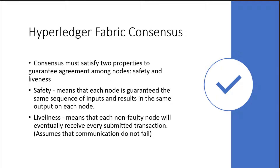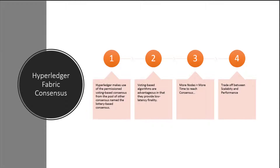The second property is liveness - making sure that each non-faulty node will receive the submitted transaction; that node has to be available to receive it. Hyperledger uses what's called a permissioned-based voting consensus mechanism - permissioned voting-based consensus. This is also coined as lottery-based consensus. The goal is that it's voting based, and the algorithm takes the most efficient approach to close a transaction.